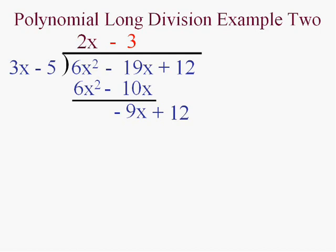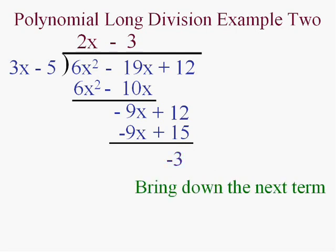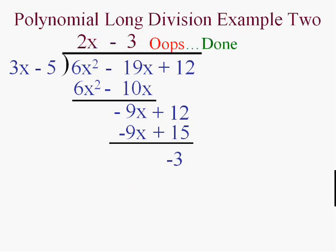Now we bring down the next term and we look at the largest terms and once again make a guess. How many times does 3x go into negative 9x? Be careful with the signs. I think it goes in minus 3 times. Be neat. Write that minus 3 right above the next term and we'll multiply. Minus 3 times 3x minus 5. Now when I subtract in this case, what am I going to get? Well of course, minus 9x minus negative 9x. They're going to cancel and 12 minus 15 is a negative 3. Now normally, I would bring down the next term, wouldn't I? But there isn't the next term. So I know I'm done.